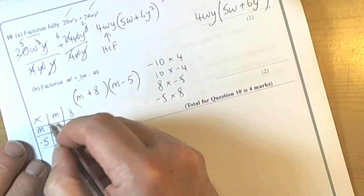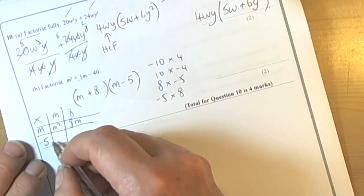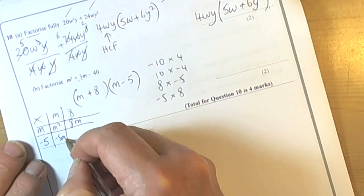So m times m is m squared, m times 8 is 8m, negative 5 times m is minus 5m, negative 5 times 8 is negative 40.